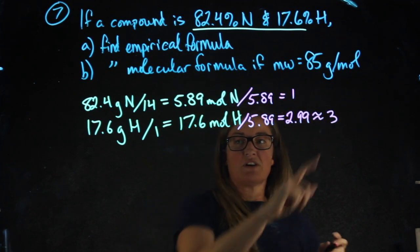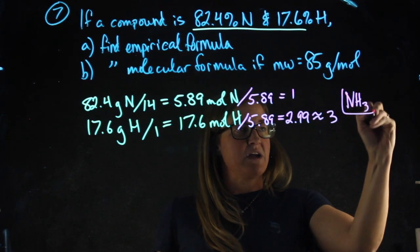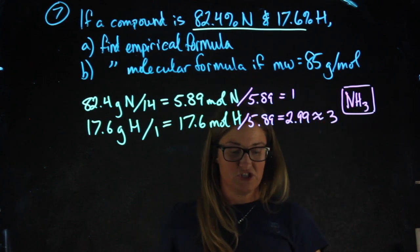Using these numbers, I can get my empirical formula, which is NH3. 1 nitrogen, 3 hydrogens.